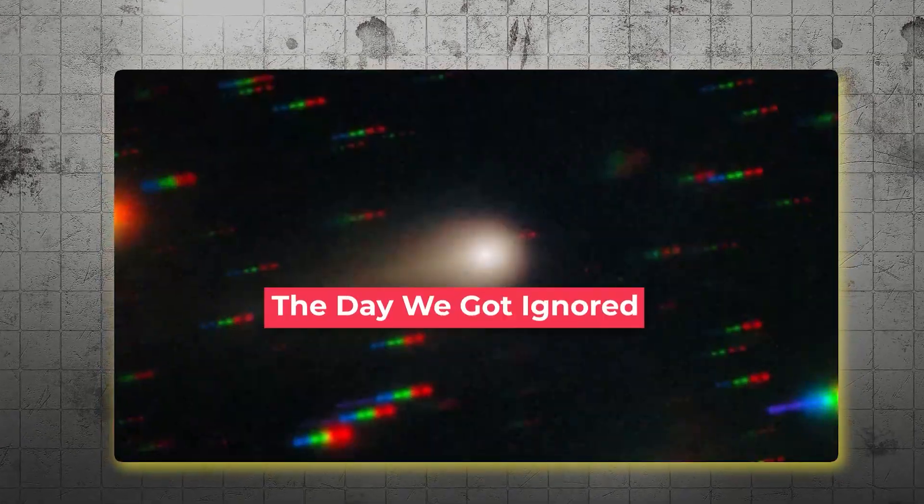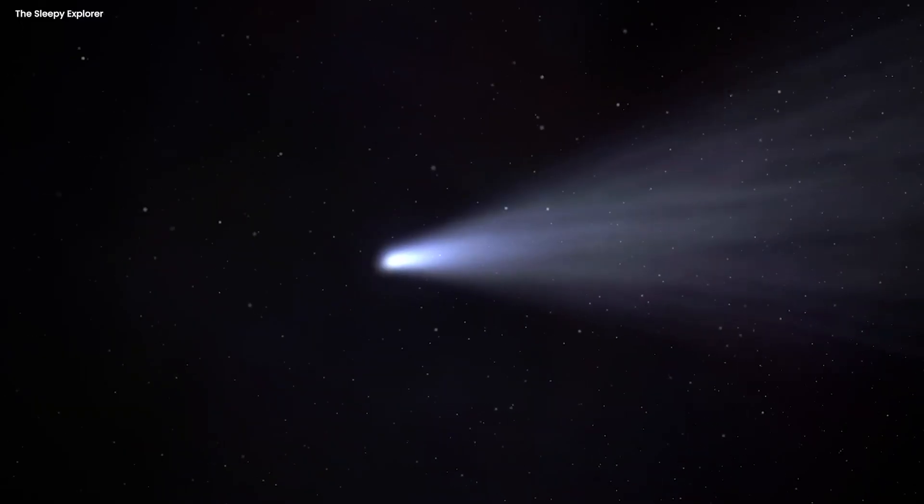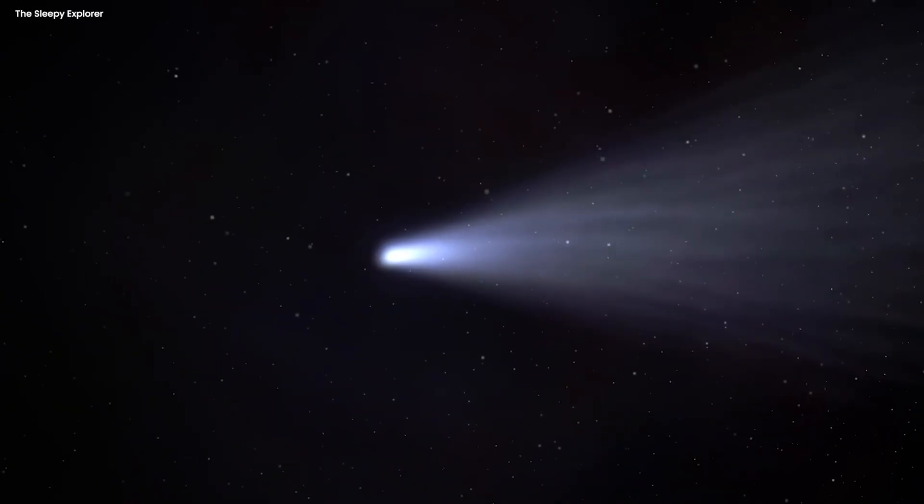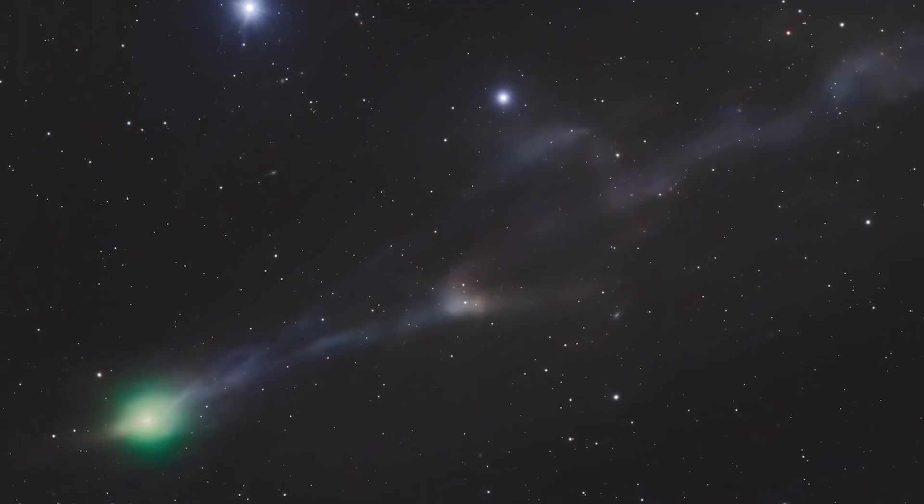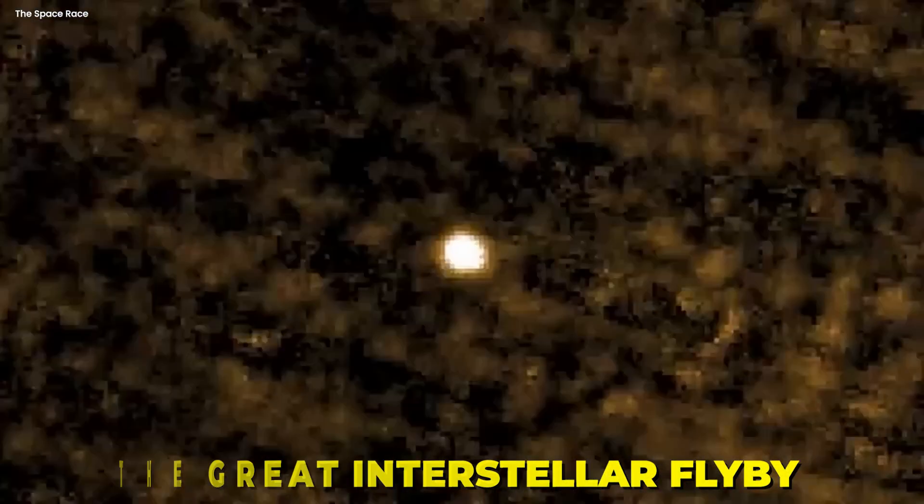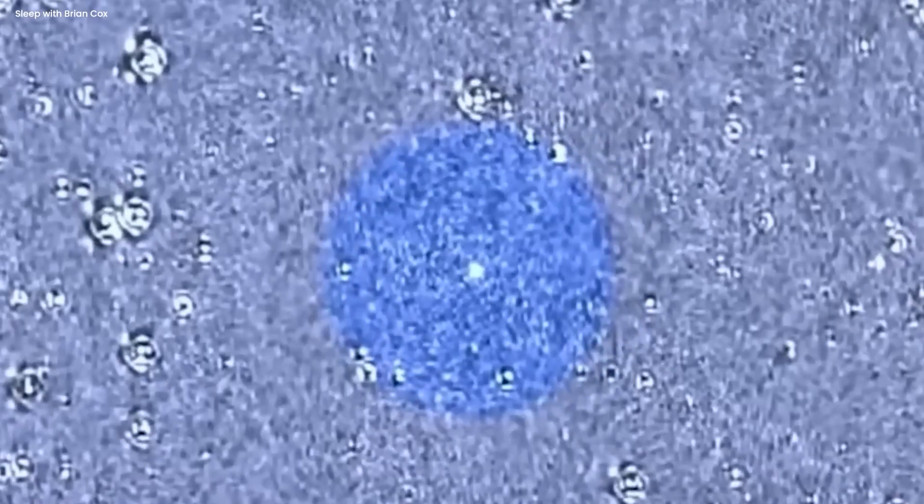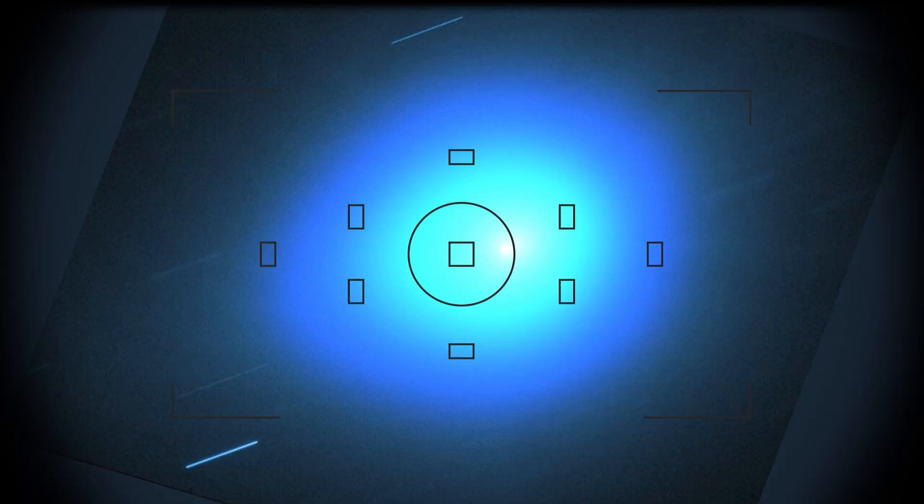The day we got ignored. Let's start with what happened on December 19th, because this is where the whole story begins to fall apart. For months, everyone had been hyping up this date as the moment when 3I Atlas would make its closest approach to Earth. The media was calling it the great interstellar flyby. Scientists were preparing their telescopes. Amateur astronomers were planning viewing parties. And all of the alien probe enthusiasts were convinced that this was going to be the day when 3I Atlas would finally reveal its true purpose.